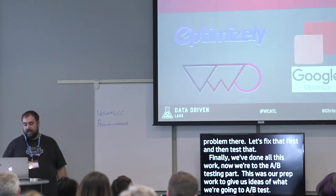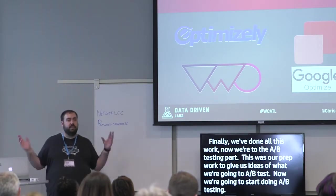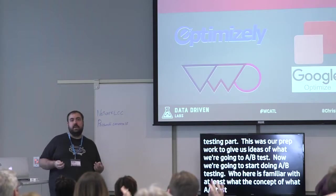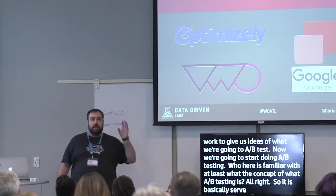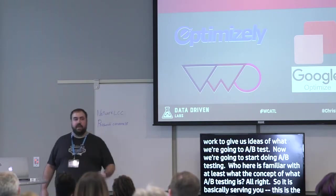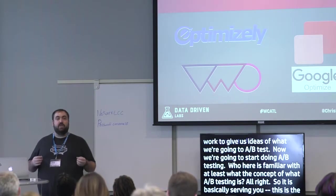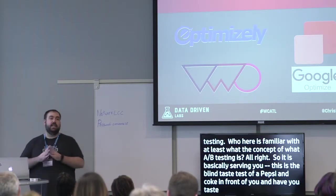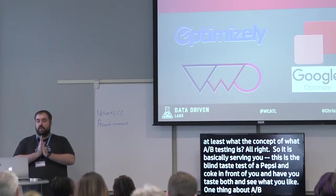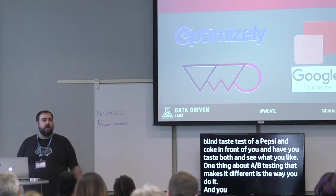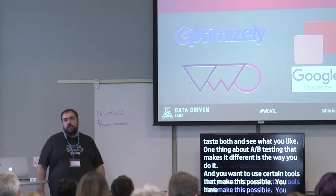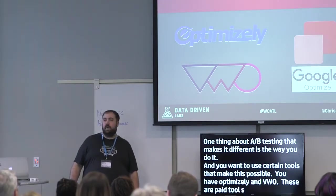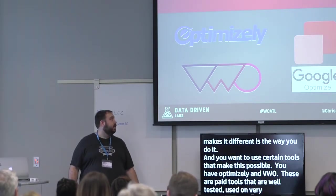Now we start A/B testing. It's basically the blind taste test — putting a Pepsi and Coke in front of you and seeing which one you prefer. The key thing about A/B testing is using the right tools. You have Optimizely and VWO — both paid tools, well-tested, used on very large sites and they work great.